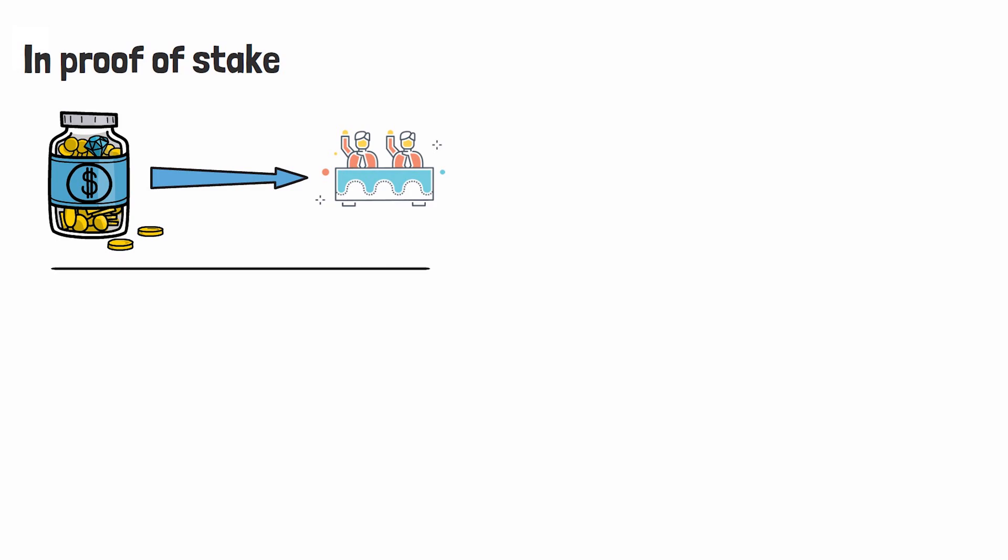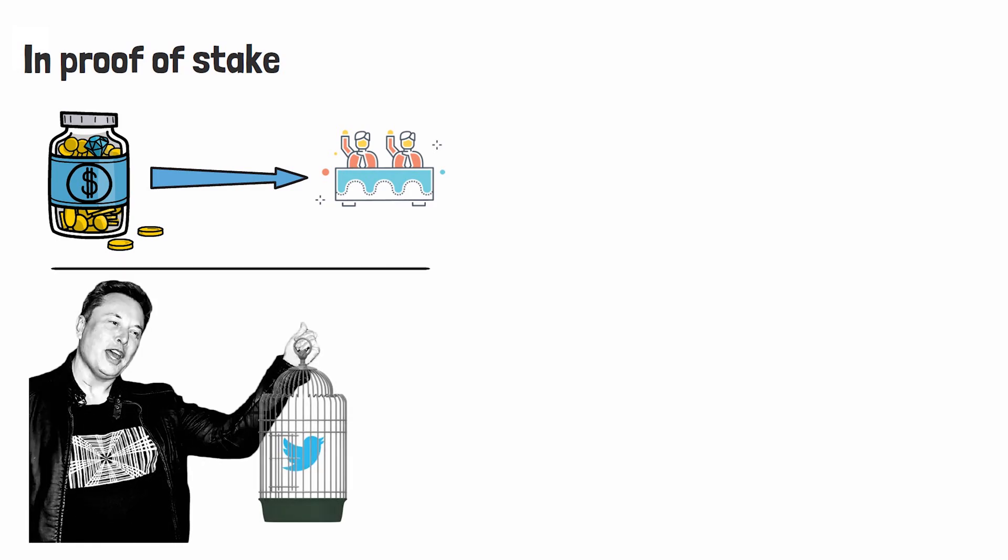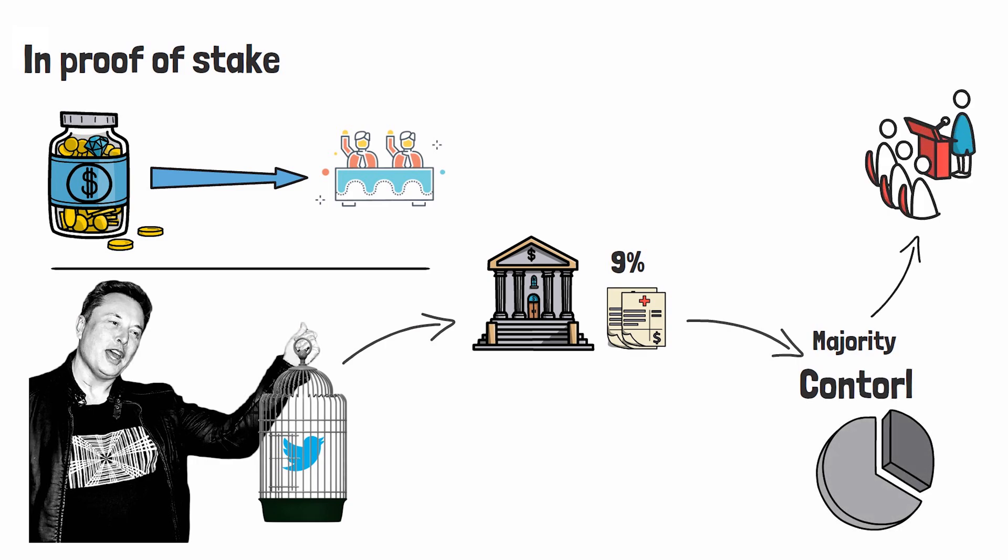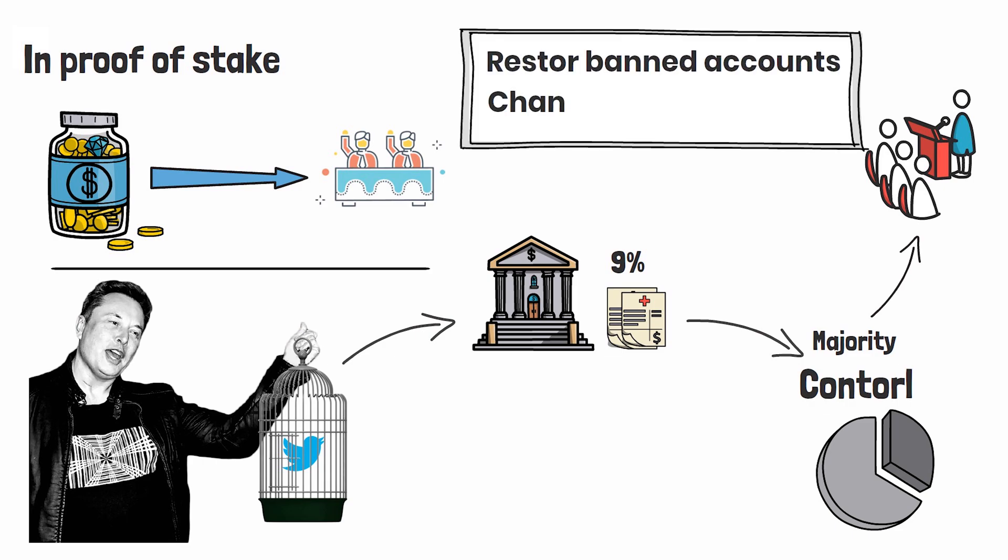I'm sure that you guys all remember Elon Musk attempting to take over Twitter. He went out into the open market, he bought nine percent of Twitter shares. This gave him the majority control over the company. Combine that with his influence on social media and it only took a few weeks before Elon was restoring banned Twitter accounts, he was changing the rules of how the business operated, and he did all of this because the amount of shares that he owned dictated his voting power in the network.